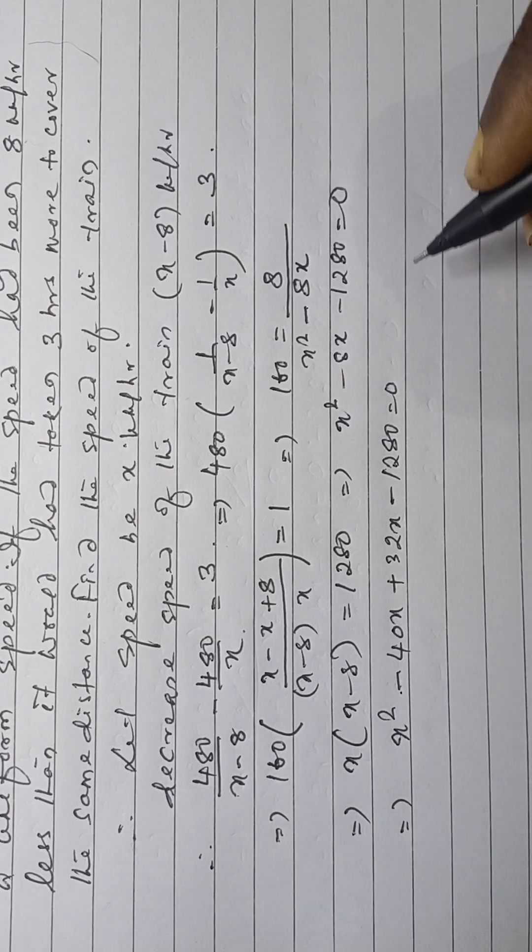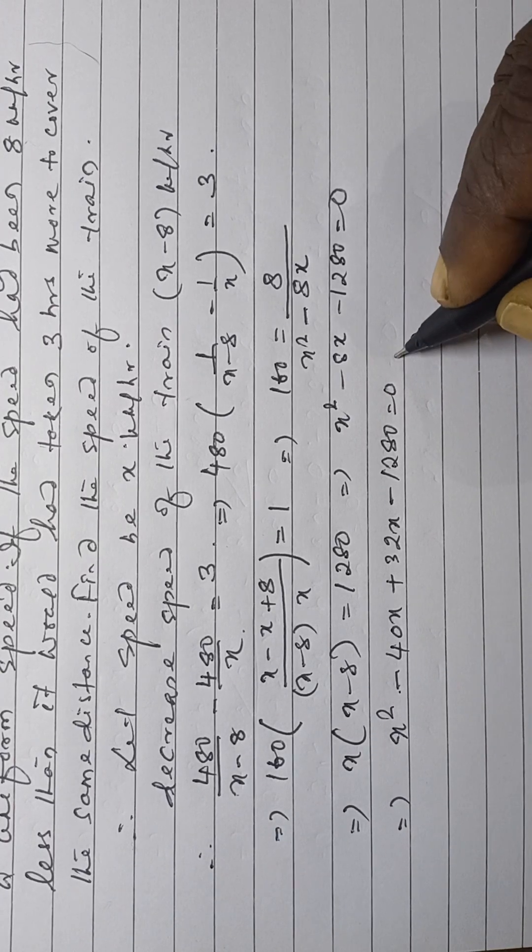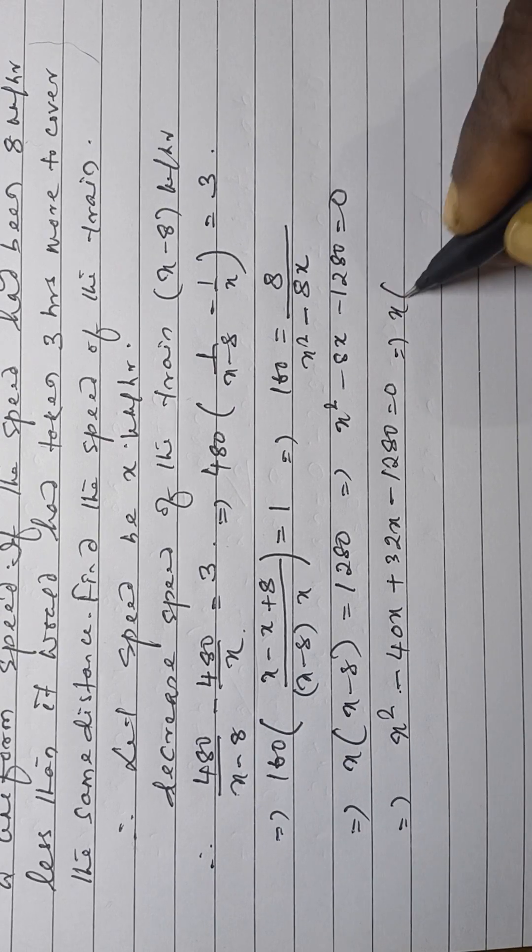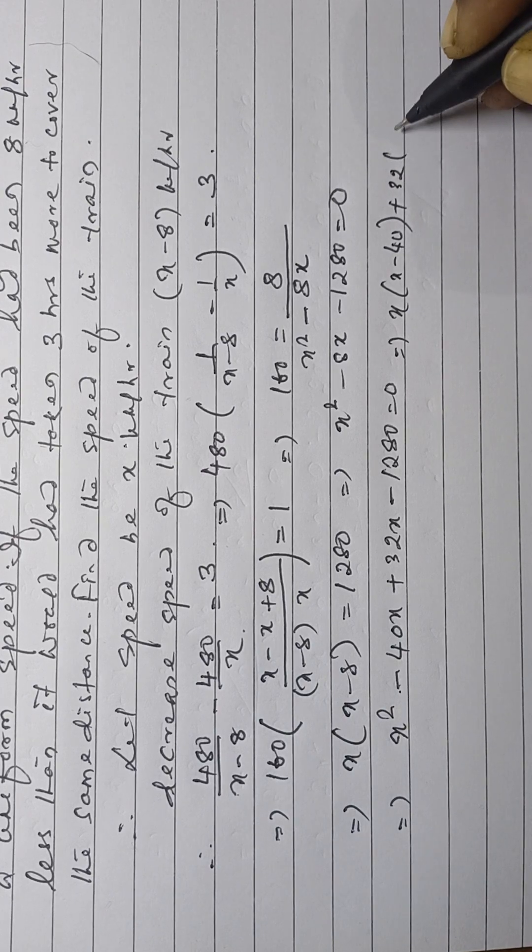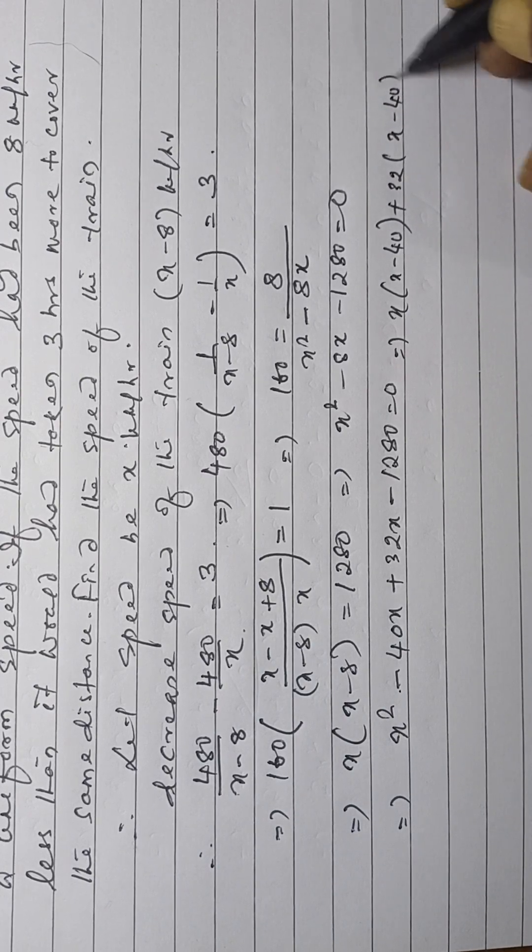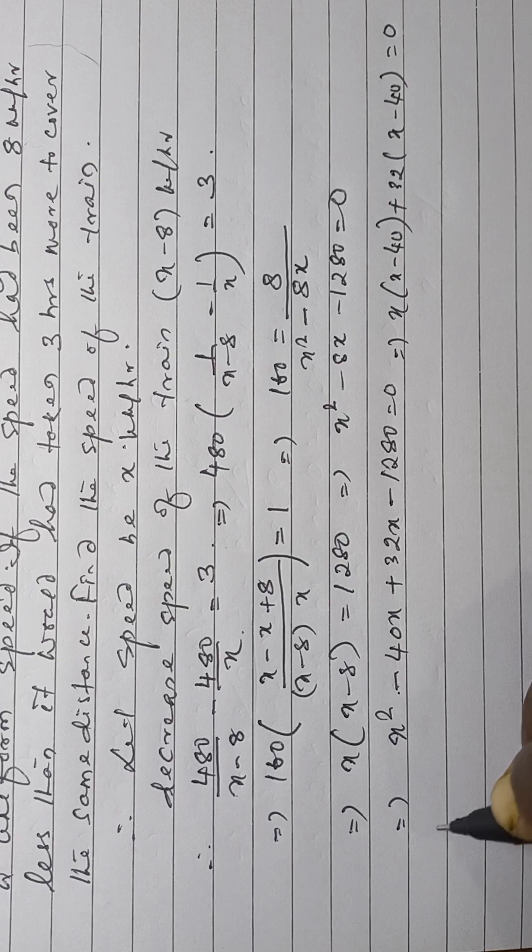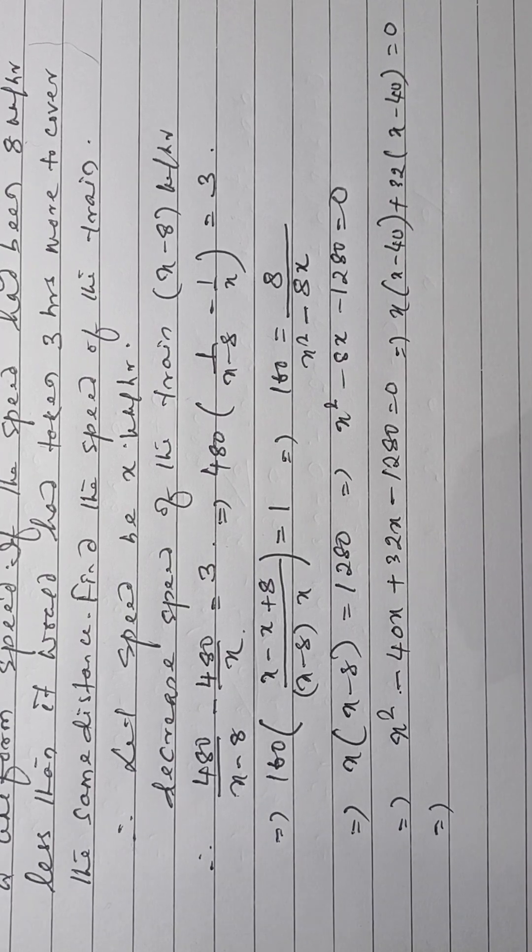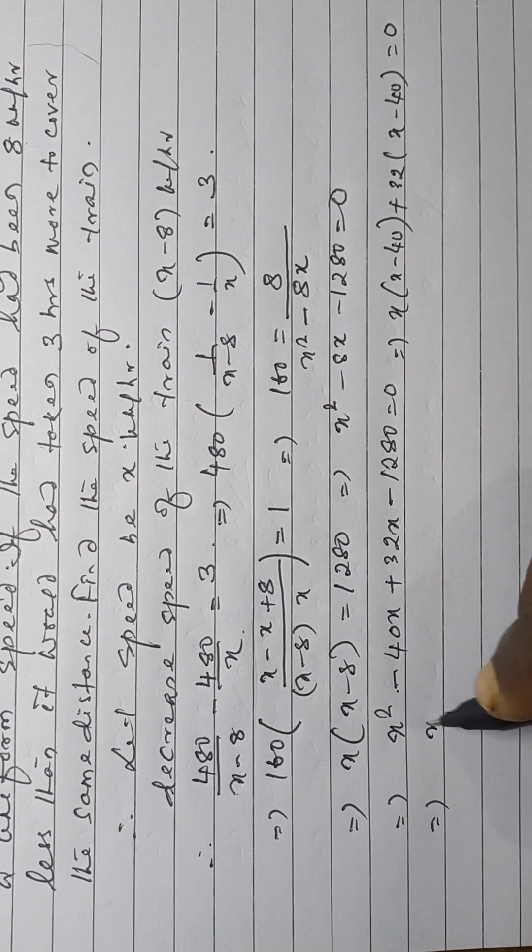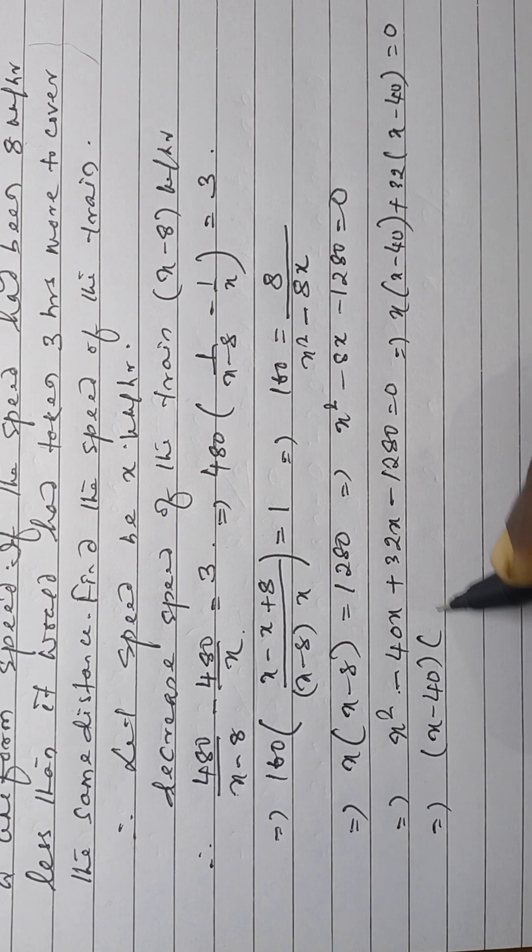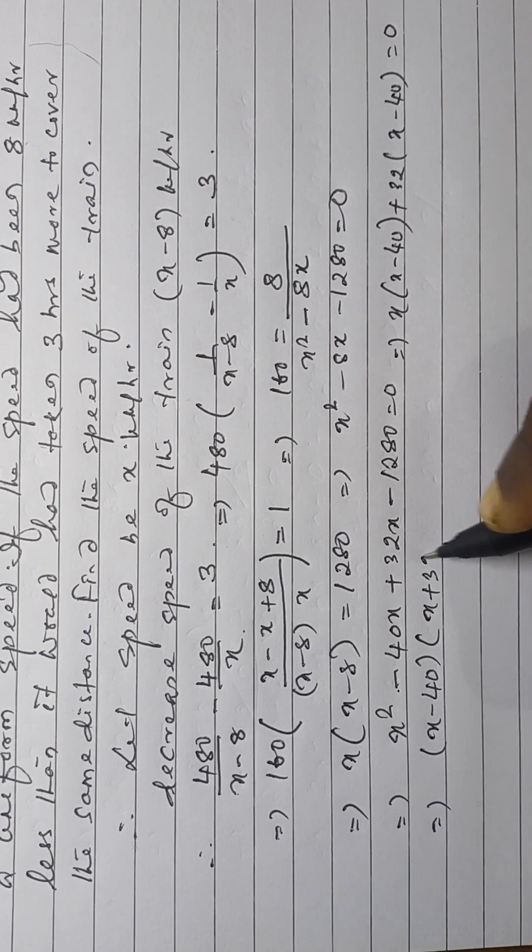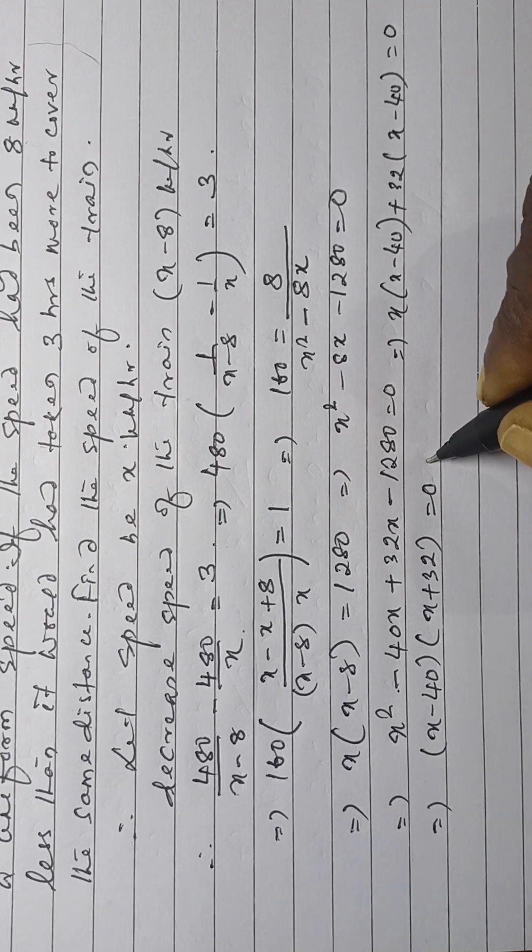Then, x is common, this is x minus 40 plus 32 is common. This is x minus 40 is equal to 0. Then, x minus 40 into x plus 32 is equal to 0.